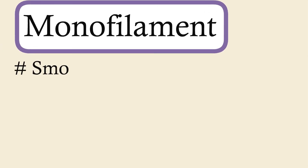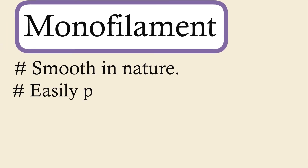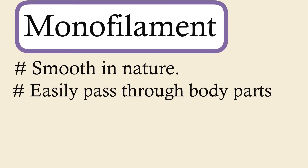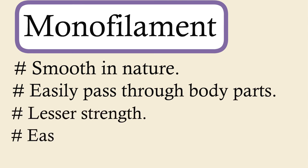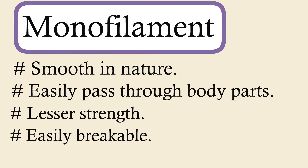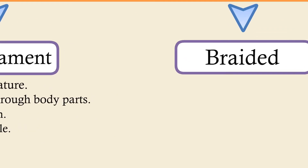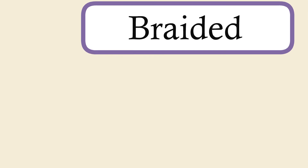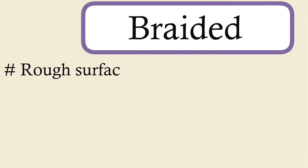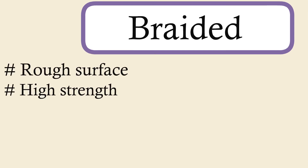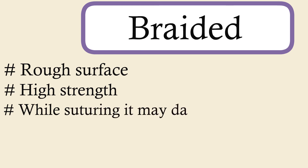The monofilament is smooth in nature and they easily pass through the body parts. They have lesser strength and they are easily breakable. Moving on to the braided type, the sutures and ligatures have rough surface and high strength. While suturing, it may damage the tissue.